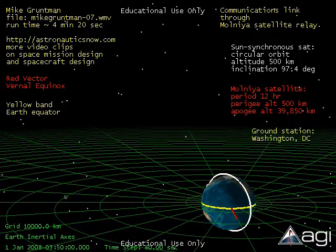This video clip demonstrates communications link provided by a relay 12-hour Molnia satellite. The red vector facing you is the vernal equinox vector. The Sun is on the left illuminating the Earth. The yellow band on the surface is the equator.